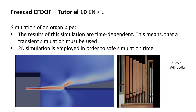Hello everybody and welcome to my tutorial number 10 about FreeCAD CFDOF. In this tutorial I will show you how to simulate an organ pipe. The results of this simulation are time dependent, which means that a transient simulation must be used. We will use a 2D simulation in order to save simulation time. You can see the air flow going up and down on the labium, and we will take a closer look at that later.